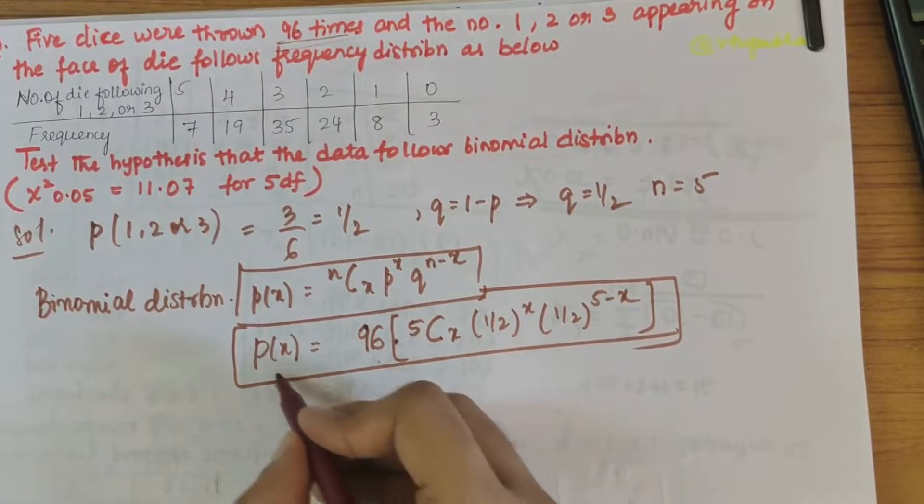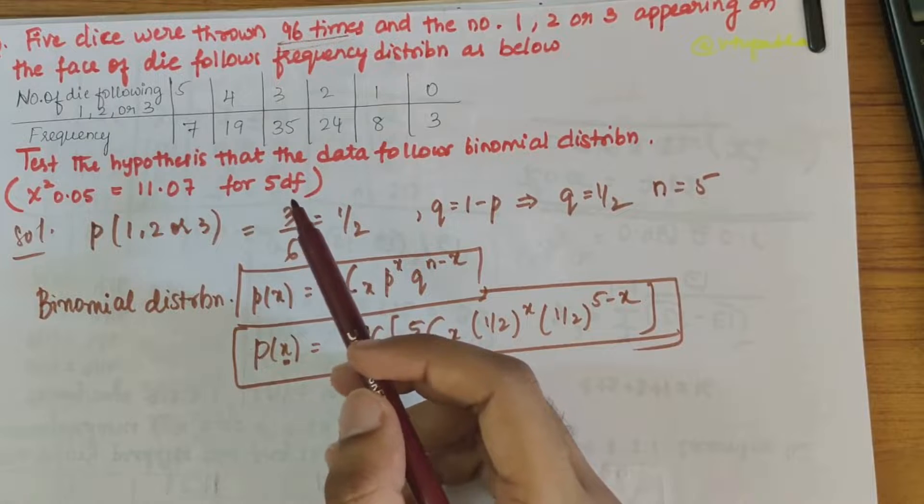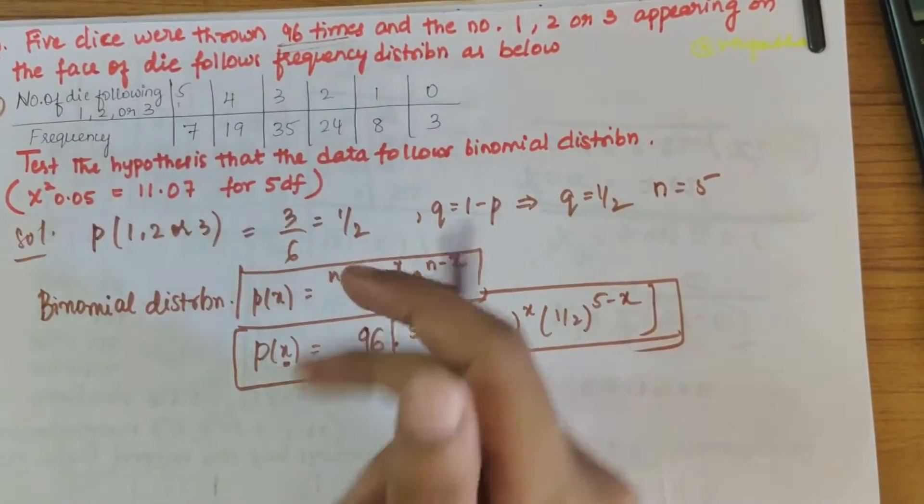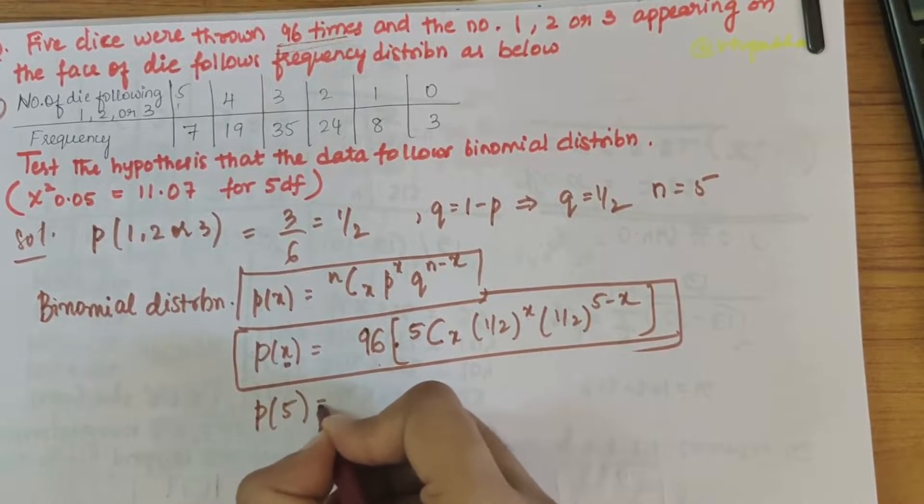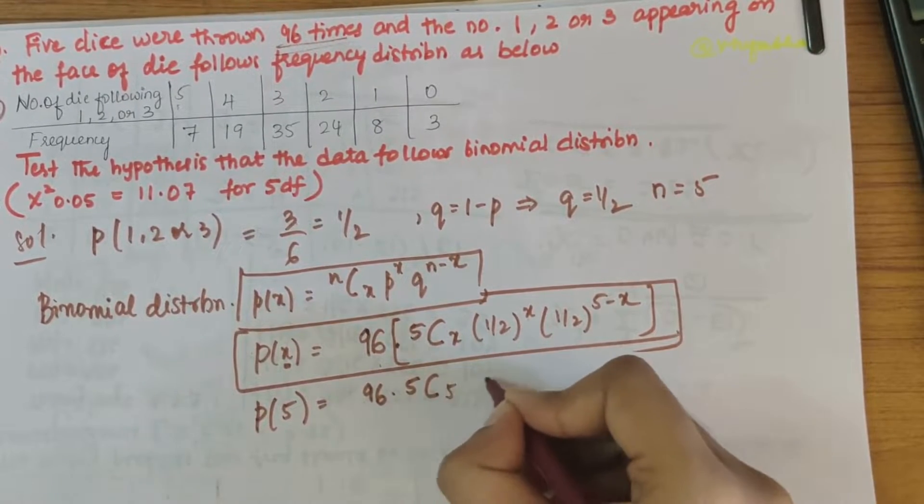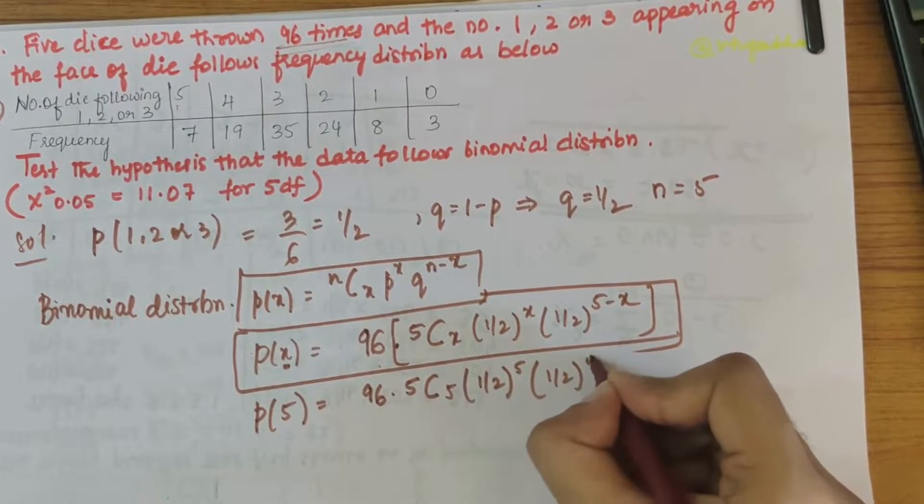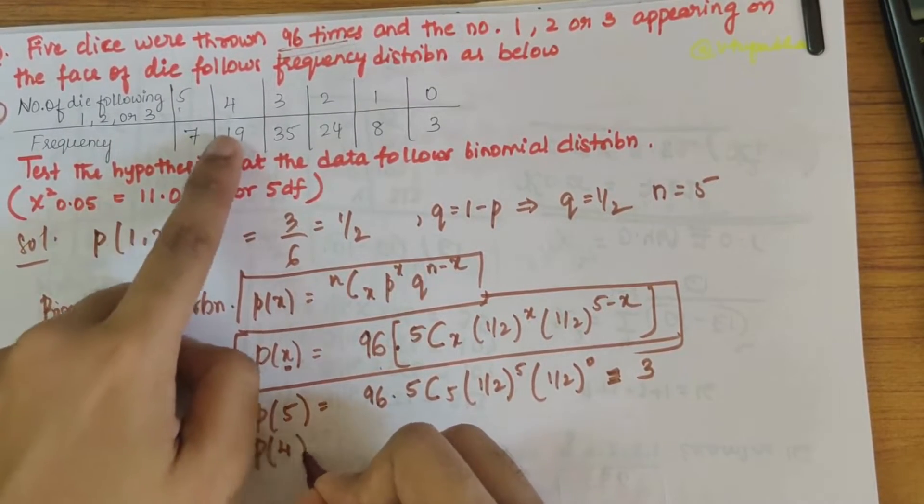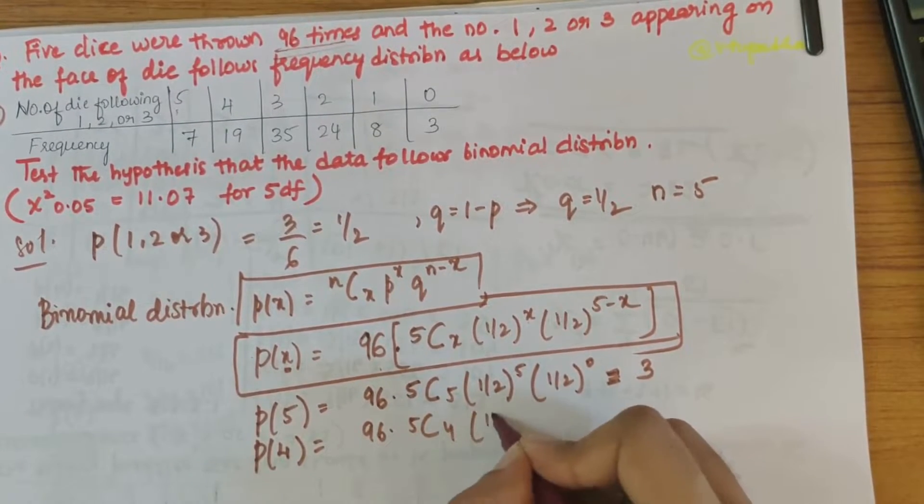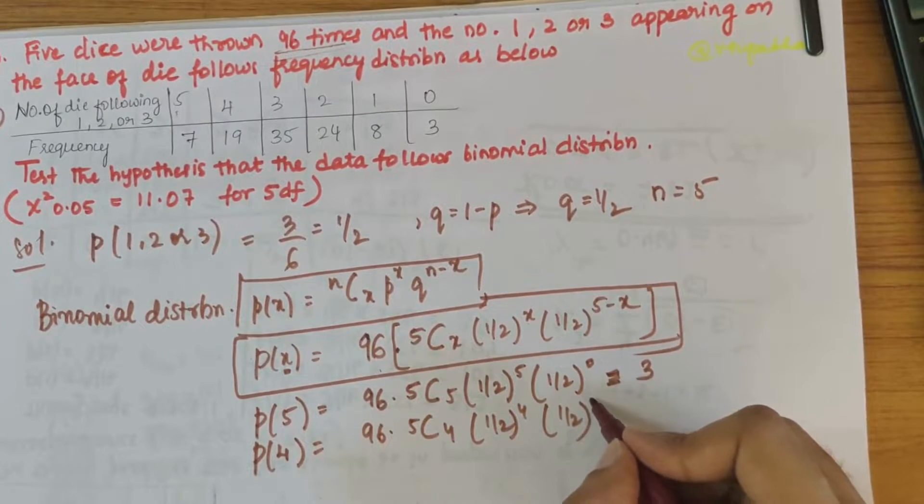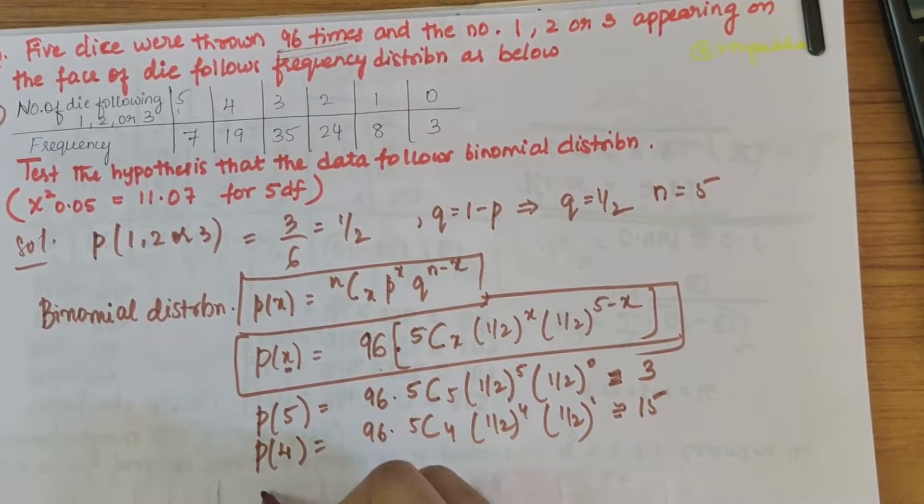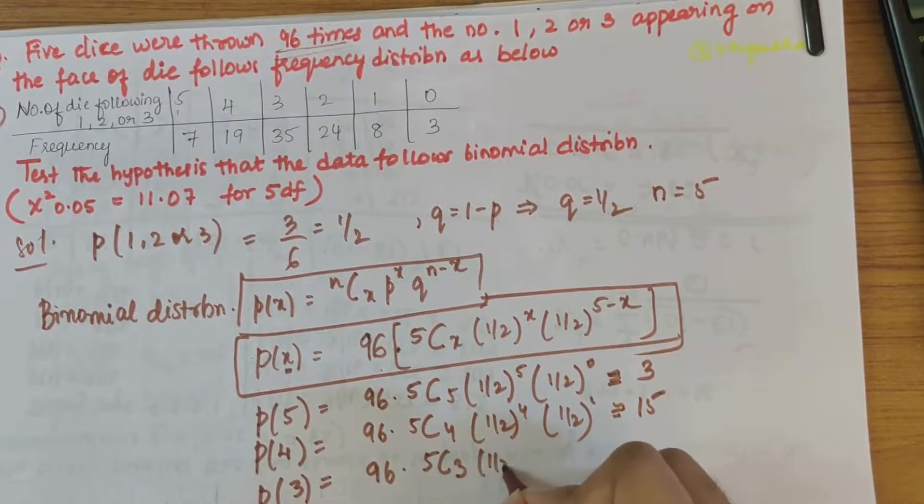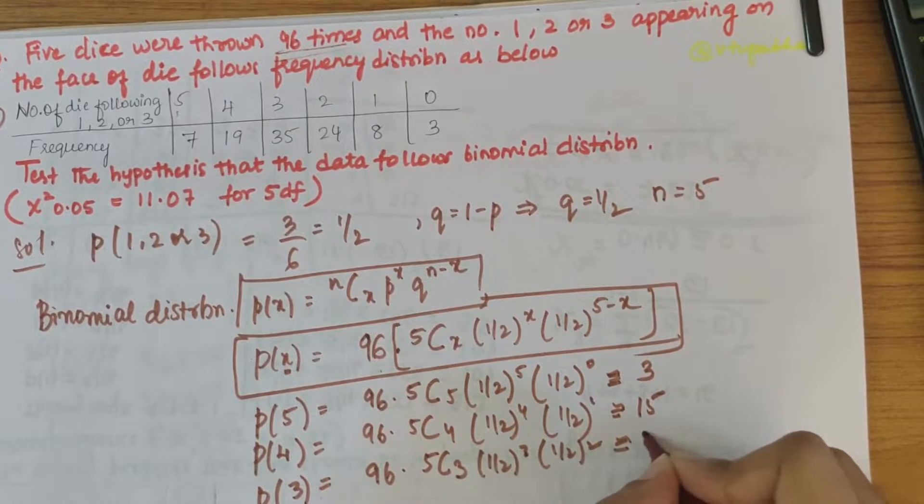The x value ranges from 0, 1, 2, 3, 4, and 5. We'll go in the similar order. First, p(5) equals 96 into 5 choose 5 times 1 by 2 to the 5 times 1 by 2 to the 0, so when you solve this you get the value is 3. Then we have p(4) equals 96 into 5 choose 4 times 1 by 2 to the 4 times 1 by 2 to the 1, which gives 15. And p(3) equals 96 times 5 choose 3 times 1 by 2 cubed times 1 by 2 squared, so you get 30.